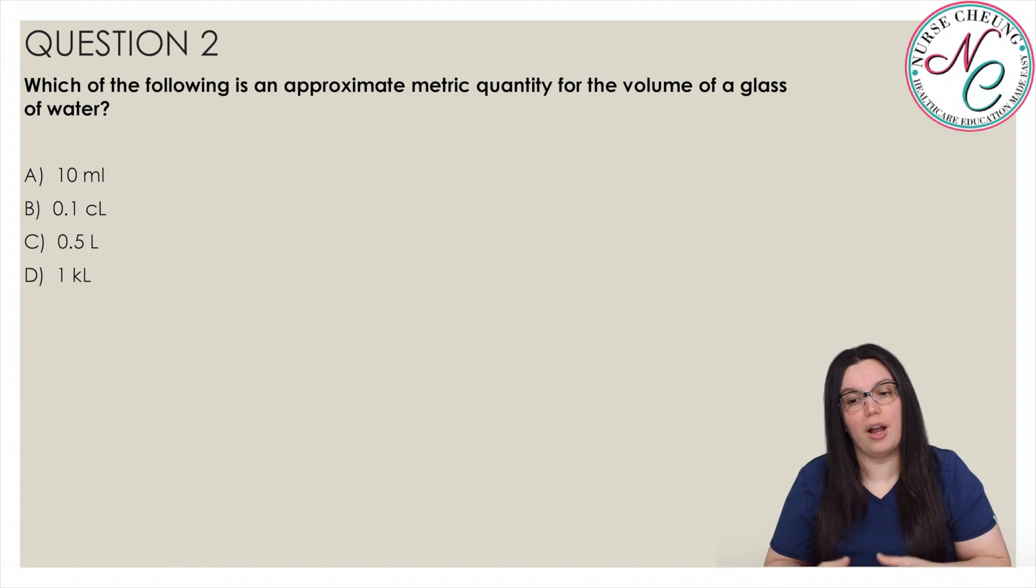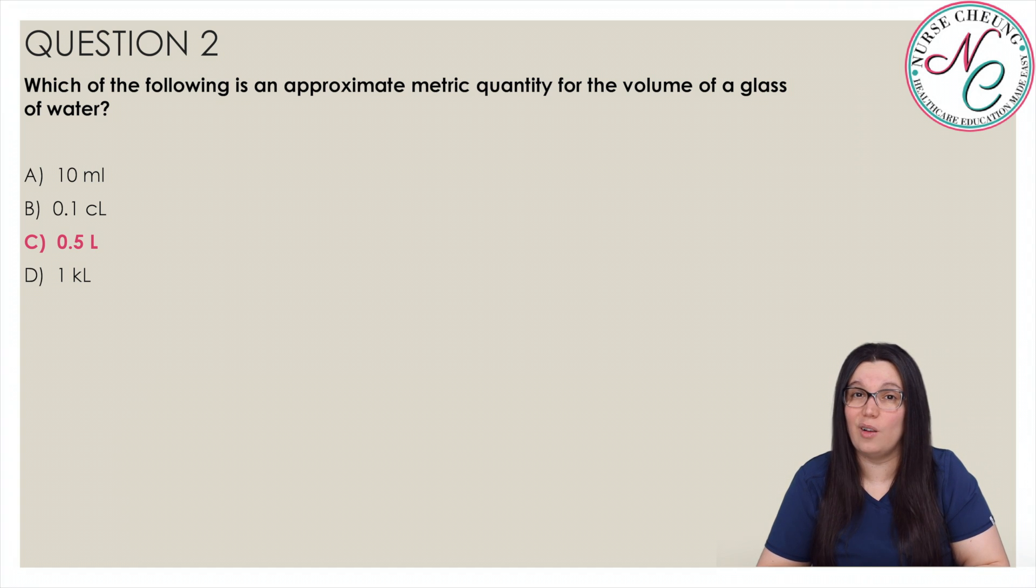Which of the following is an approximate metric quantity for the volume of a glass of water? Is it A, 10 milliliters, B, 0.1 centiliters, C, 0.5 liters, or D, 1 kiloliter? And the correct answer is C, 0.5 liters. A glass of water is best approximated by a measurement of about a half a liter or 0.5 liters. The measurement of 10 milliliters and 0.1 centiliters are equal and are both too small. The measurement of 1 kiloliter is also too large.